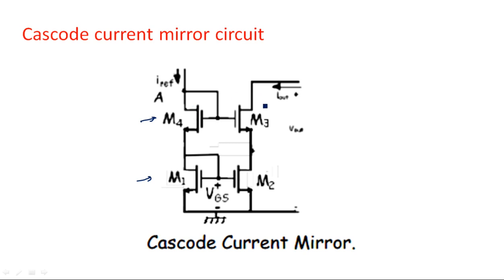M3 and M4 replicate M1 and M2. Previously we had the M1 transistor on the right-hand side and M2 on the left-hand side, where the gate and drain are connected. If we insert another mirror pair in series with a simple current mirror, we obtain this cascode current mirror circuit.